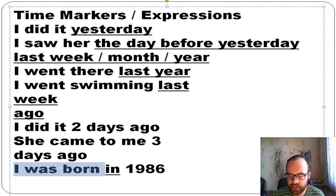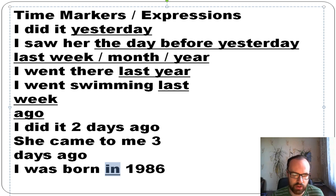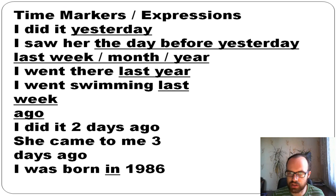We also often use 'in' with a year when talking about the past. For example: 'I was born in 1986.' You can write about when you were born in the comments.